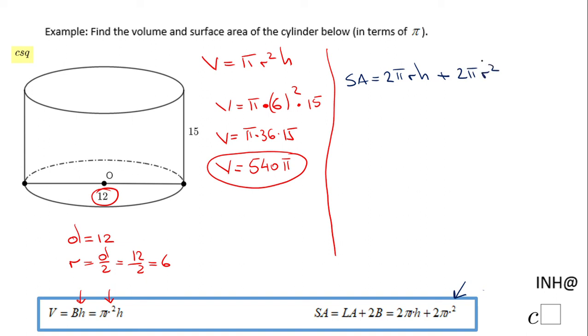In this case you have 2 pi, the radius is 6 as we found before, the height is 15. We can move to plus 2 pi, and the radius is 6 again, 6 squared. So we have 2 times 6 times 15, that is 12 times 15, and that is 180 pi.